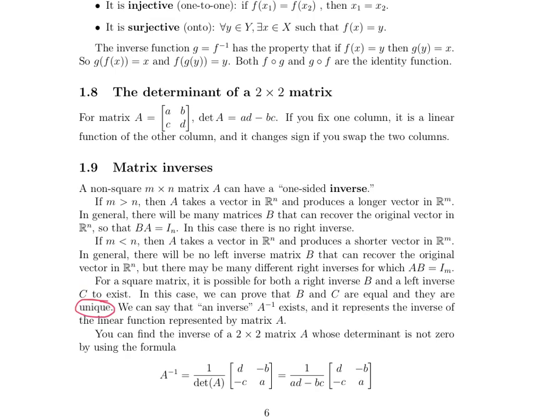Usually we denote this very similarly to our function notation — it looks like A to the negative one. It does not actually mean A to the negative one; it means the inverse matrix. It means that if you took the square matrix A and multiplied it by the inverse on either side, it would return the identity matrix, which is a matrix full of zeros except for ones along the diagonal from top left to bottom right.